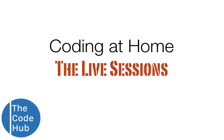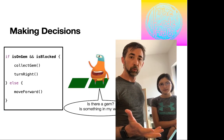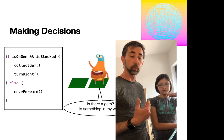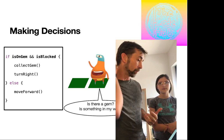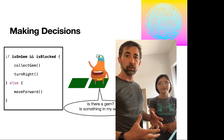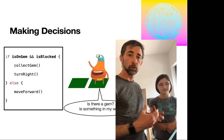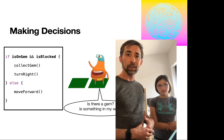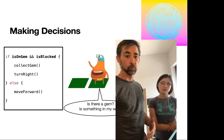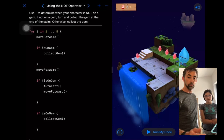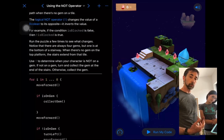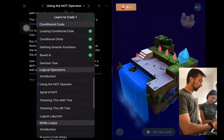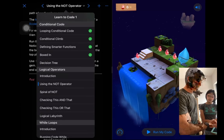Welcome back to Coding at Home with the Code Hub. We have a special guest and we're going to do a live debugging session. We're still on logical operators and conditional coding. We're in the playground called Learner Code One, in the chapter on logical operators, specifically the 'using the NOT operator' lesson.